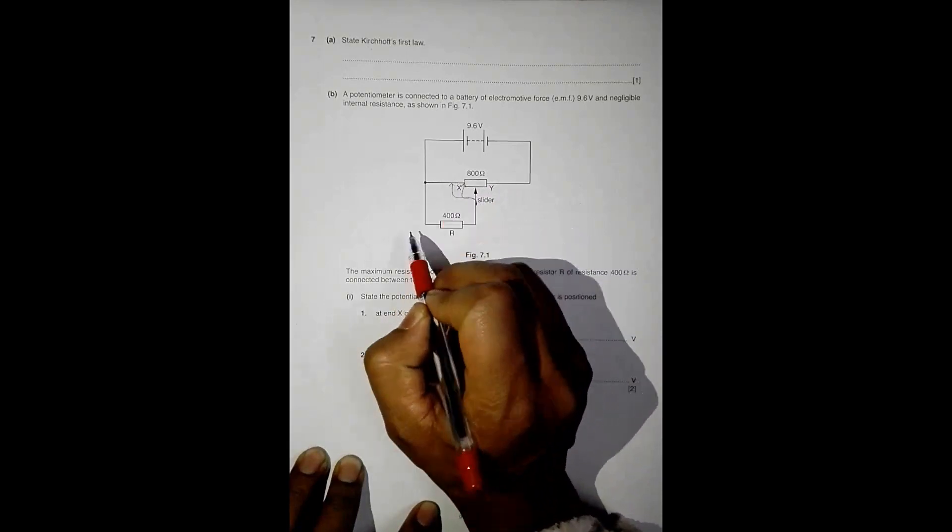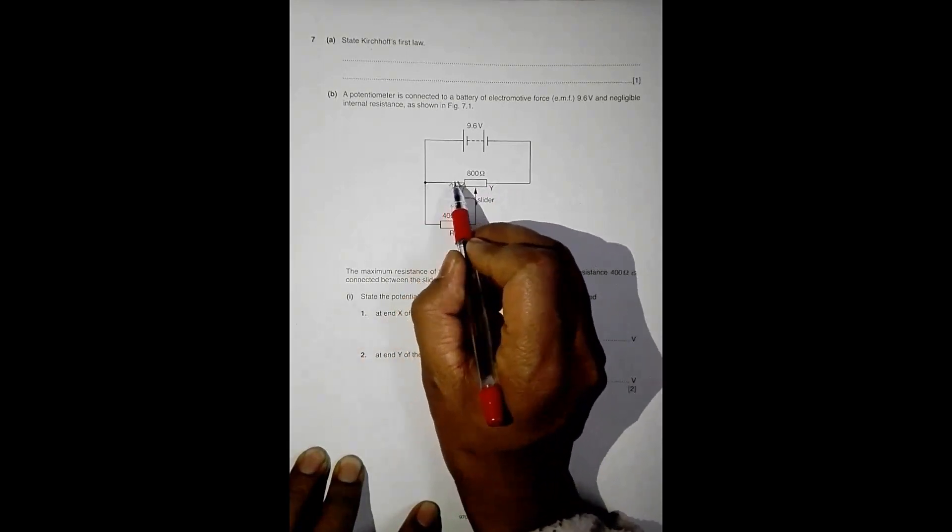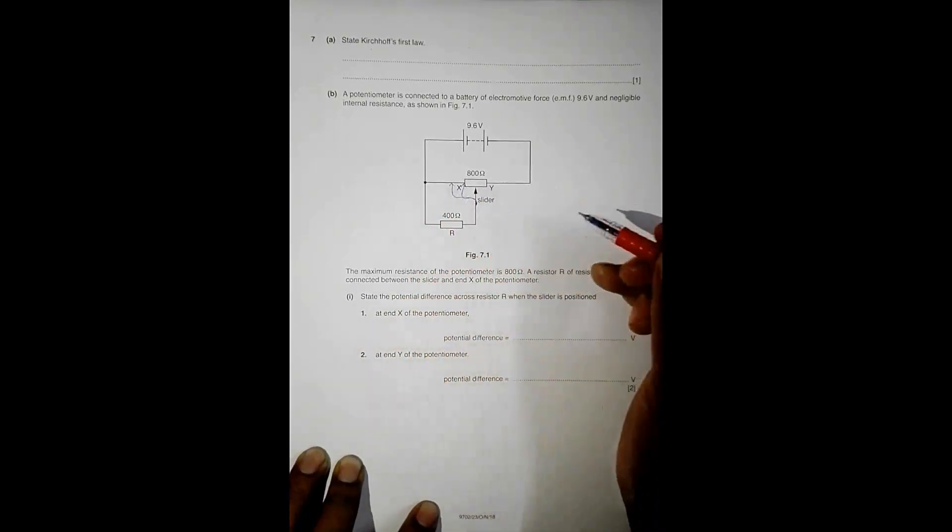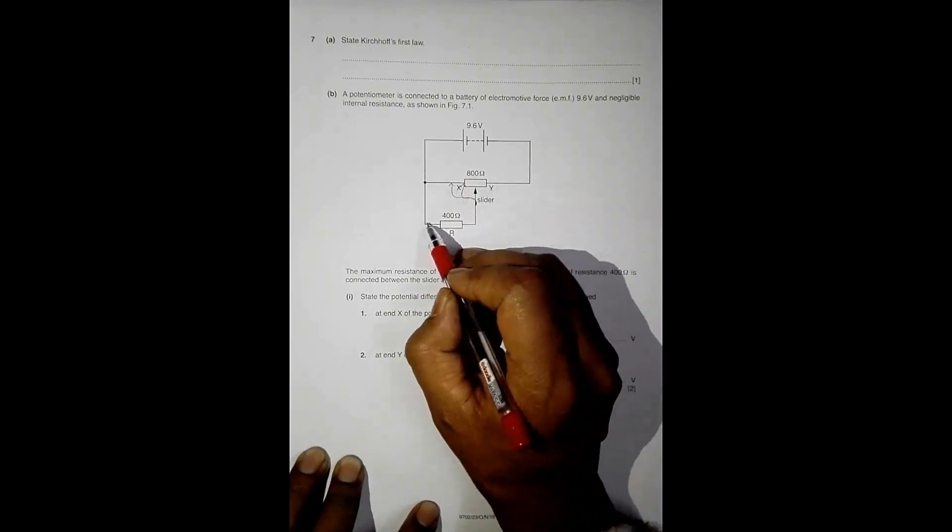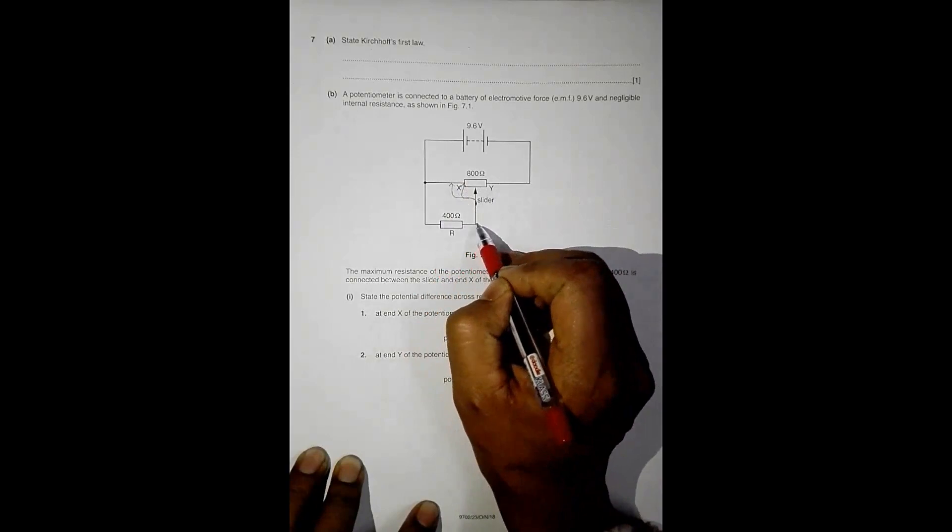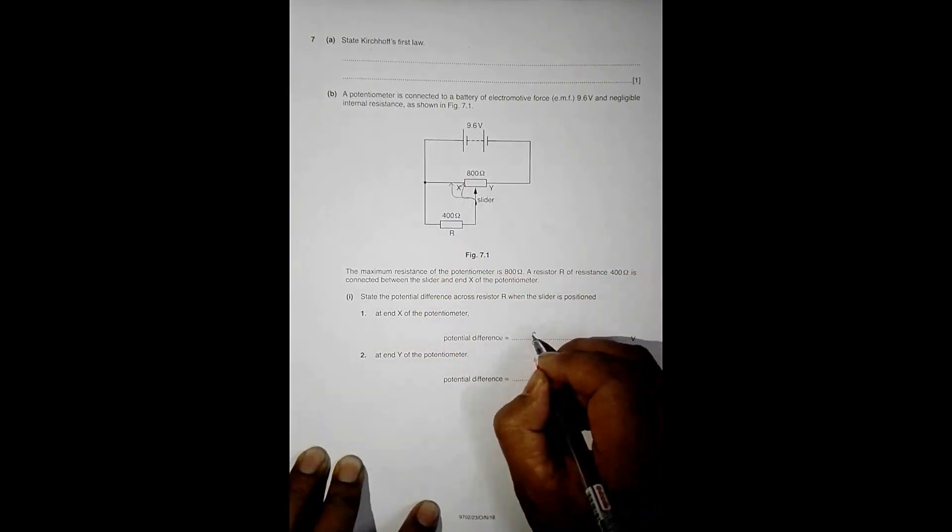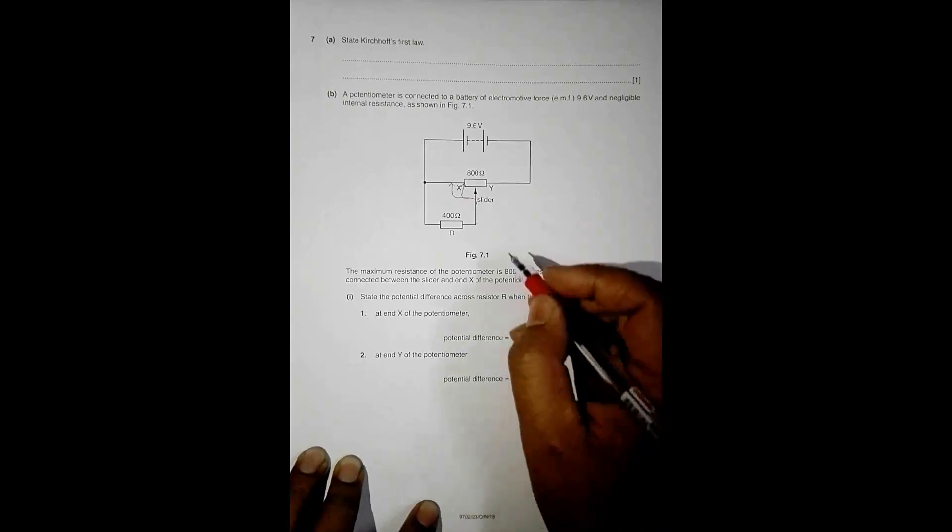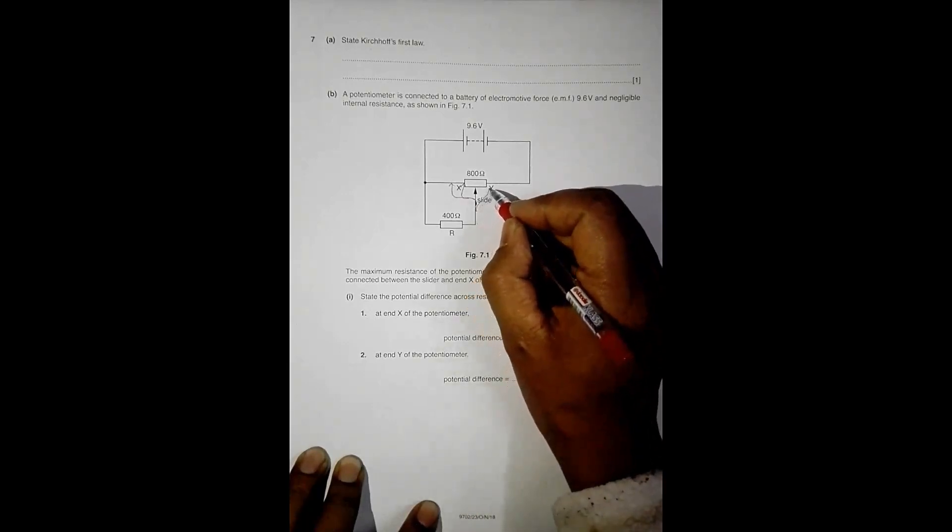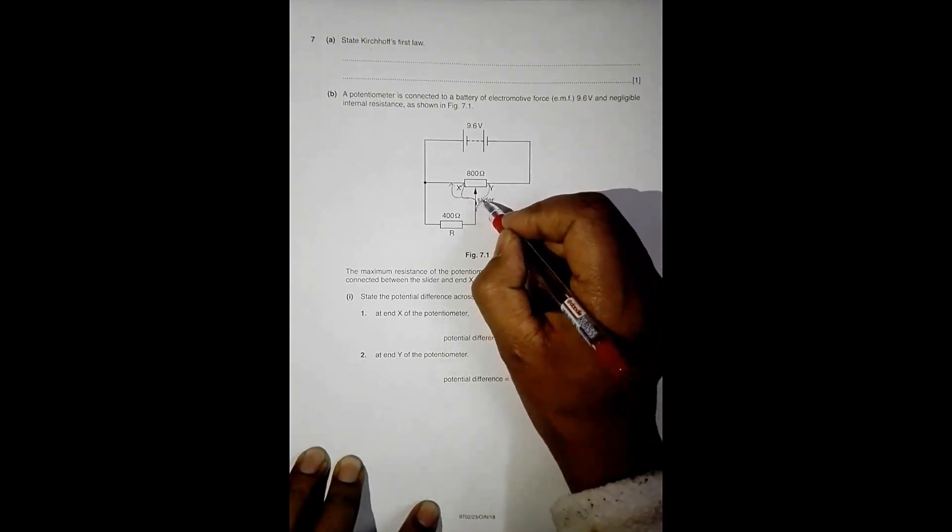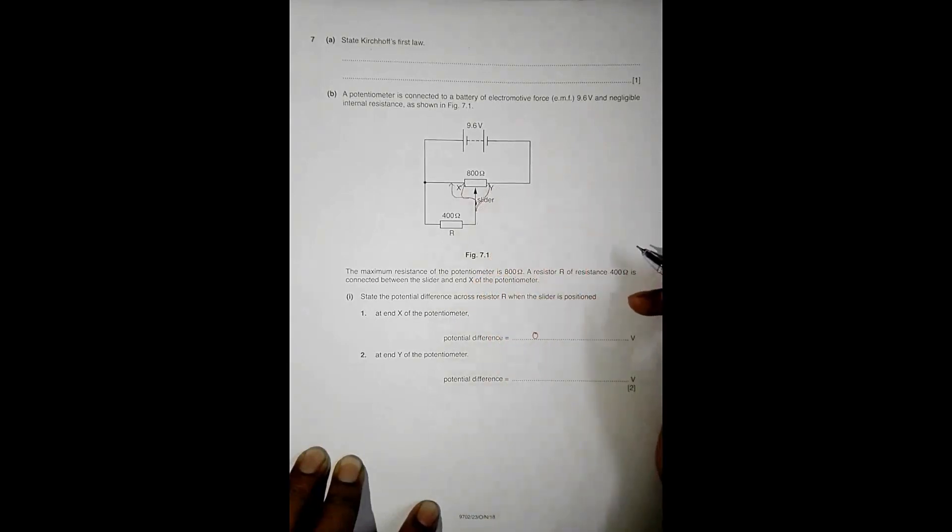Since the resistance is zero, then the PD across this thing should also be zero. Zero resistance means zero PD, so it should be zero volts. And when it is at end Y here, now what happens?